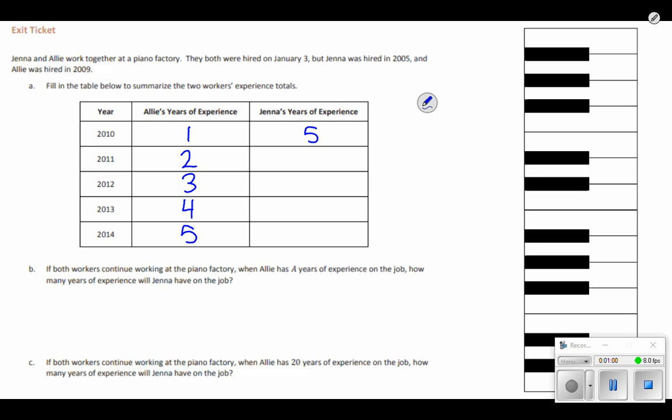When we take a look at Jenna's, Jenna has been working four years longer. So if we have Allie at two years of experience, we have Jenna at six years of experience. Seven, eight, nine.